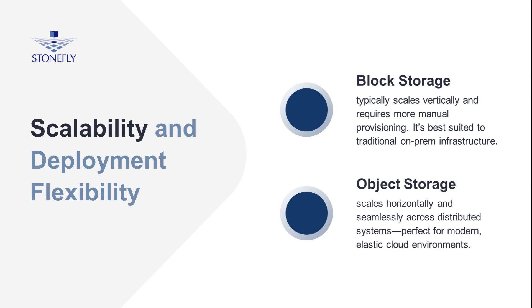Scalability models are another deciding factor. Block storage typically scales vertically, meaning increased capacity often demands additional provisioning or more powerful hardware. Object storage scales horizontally across commodity infrastructure, enabling elastic expansion without service disruption — an architectural match for modern enterprises embracing cloud.